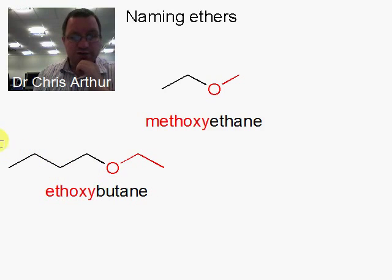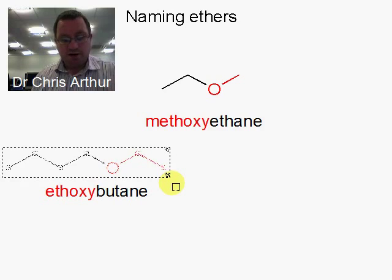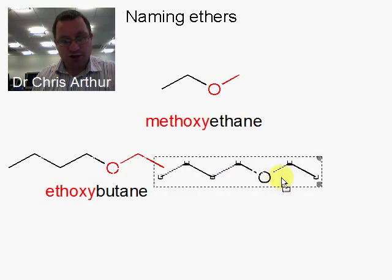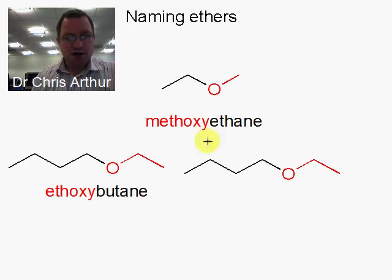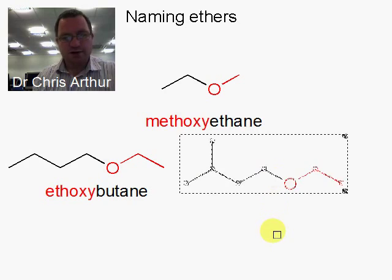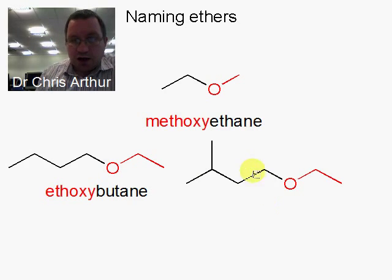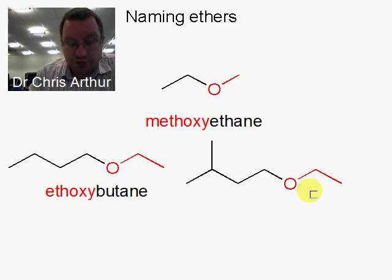Now I'm going to give you an example where we have a bit of branching happening. We have this structure, and this time we put a methyl group there. The ethoxy group — the ether — is a functional group, and therefore it's the most important part of the molecule.